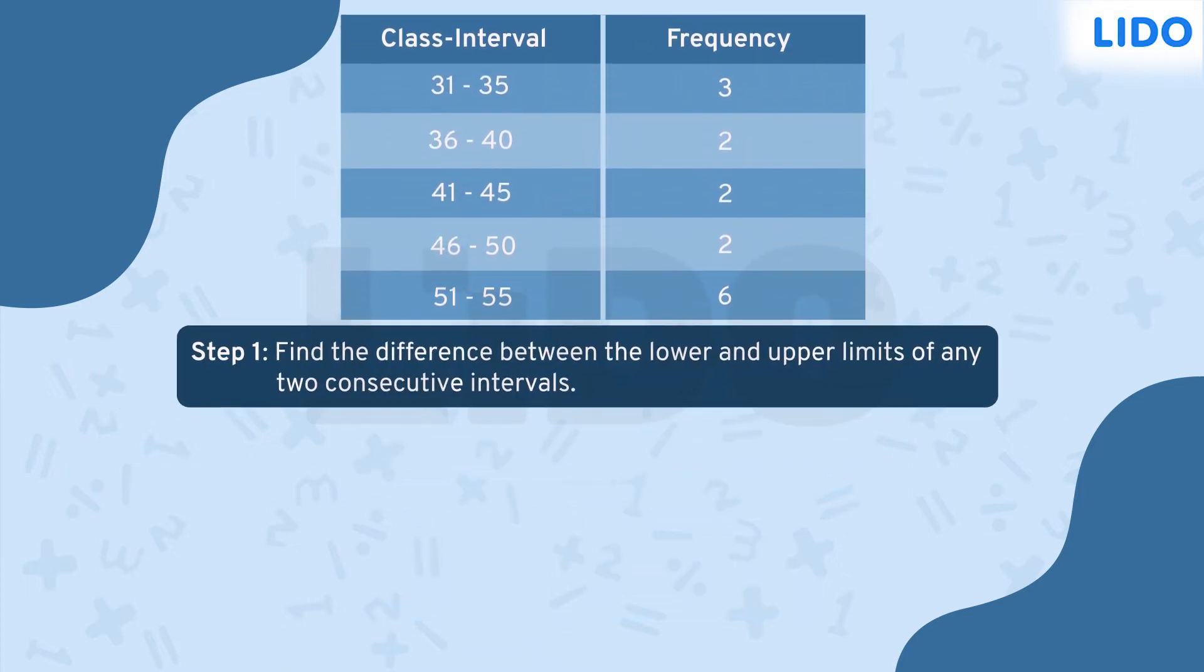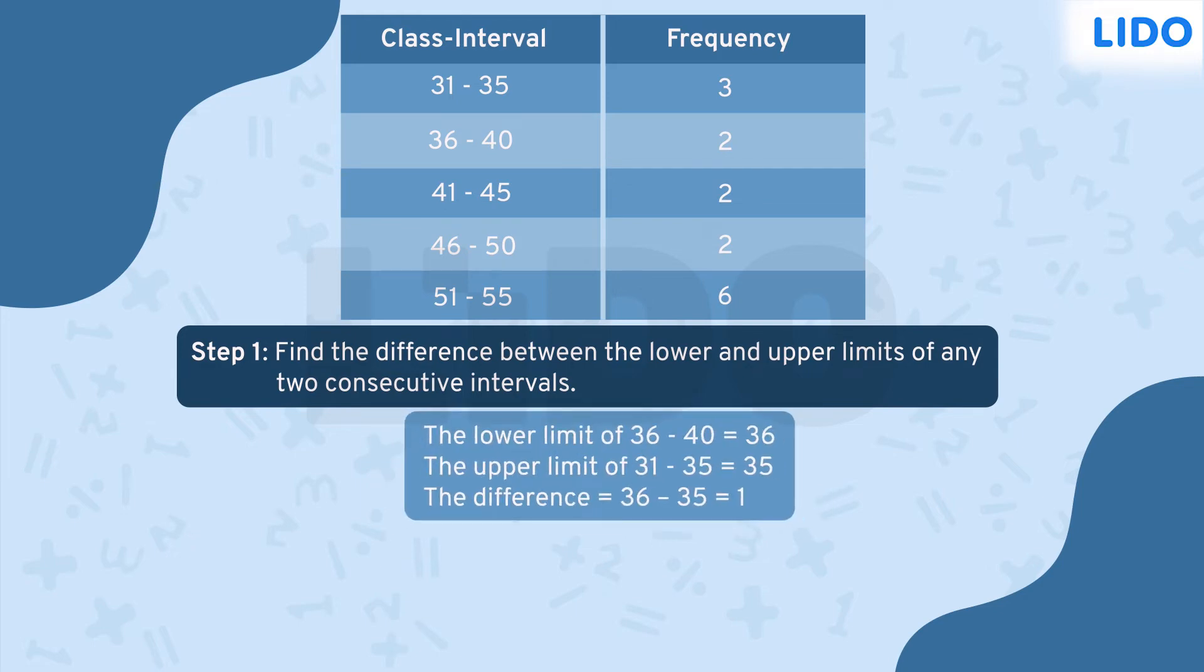Let's look at the class intervals here. The upper limit of the first interval is 35 and the lower limit of the next interval is 36. First of all, we take the difference, which is 1. It doesn't matter which interval we choose. The difference will remain the same.